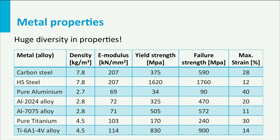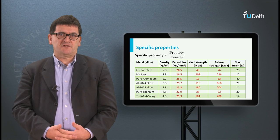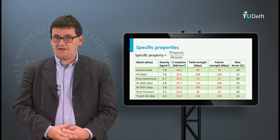For aircraft, besides strength and stiffness, weight is very important, which is why we usually work with specific properties. In case of tensile load, the specific property is obtained by dividing the property by the density of the metal alloy. Look at the numbers in red — notice that some materials with high property values now have much lower specific property values, as you can see for steel alloys. Another striking feature is that the stiffness or E-modulus for all metal alloys is more or less the same, about 25 gigapascals. Note that the formula for specific properties might be different for other load cases, so be careful.